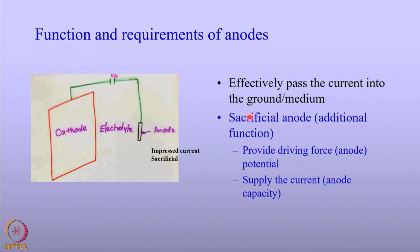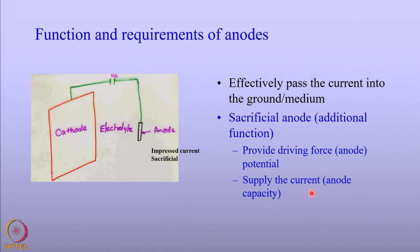When you talk about the sacrificial anode, it has to perform additional functions. One is to provide a driving force to pass a current between the anode and the cathode, which is given by the potential of the sacrificial anodes. It also has to give the current, given in terms of the anode capacity. Whereas in the impressed current cathodic protection system, the rectifier provides both the driving force and the current.